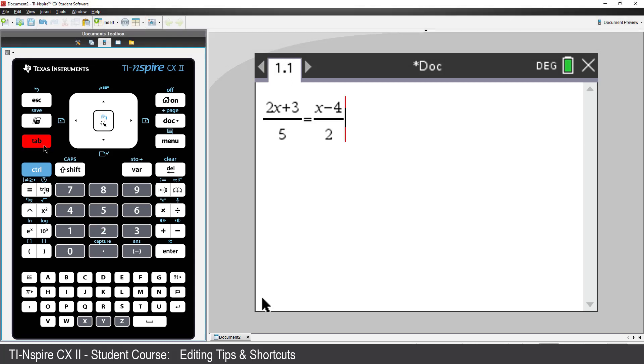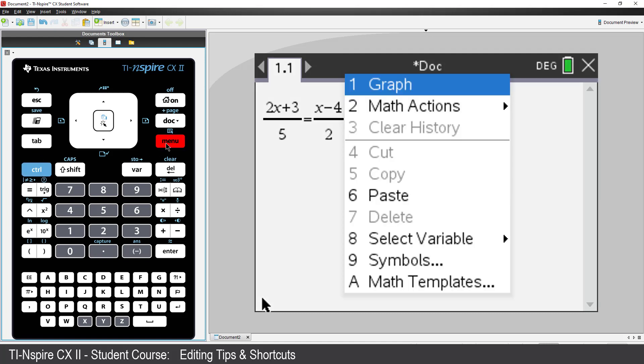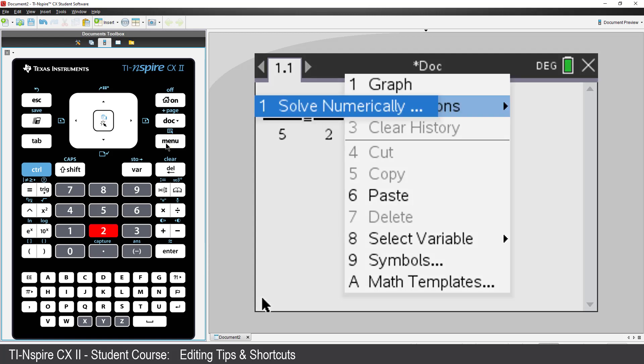Now that my equation has been entered, press CTRL followed by Menu. This is like a right mouse click on a computer. I want to select Math Actions. I could arrow down, or just press the number beside the menu option, and then select Solve Numerically.